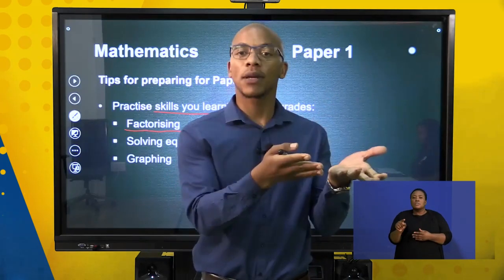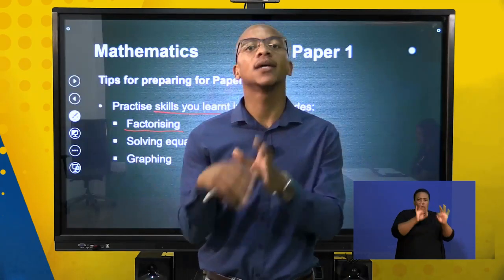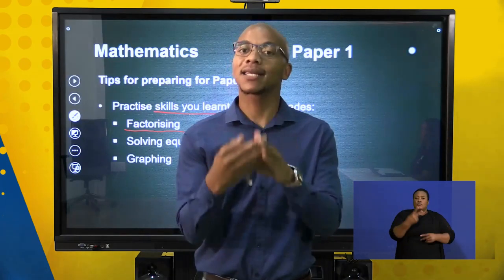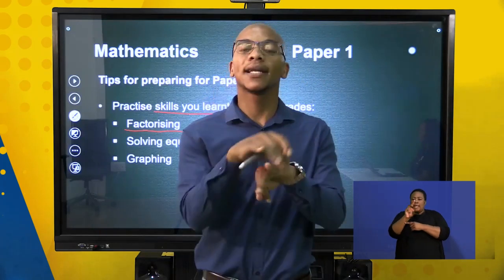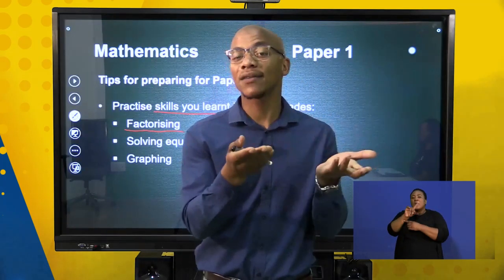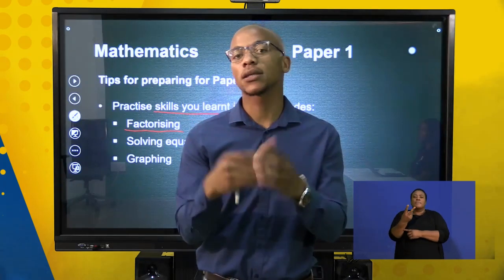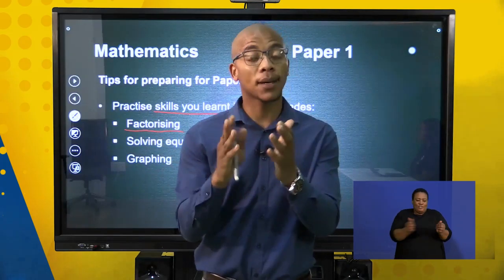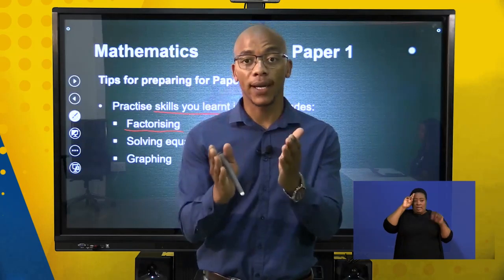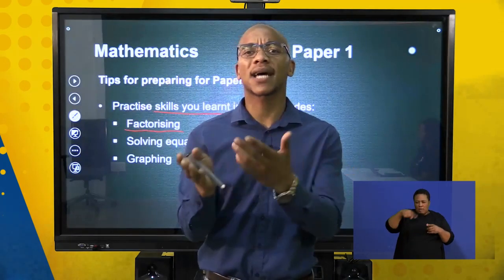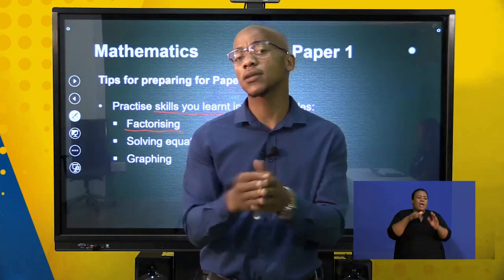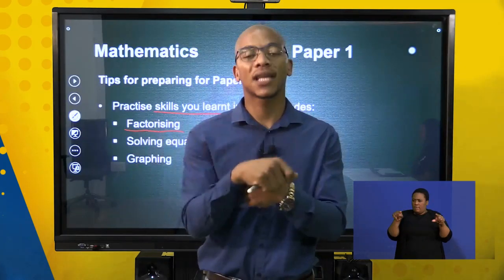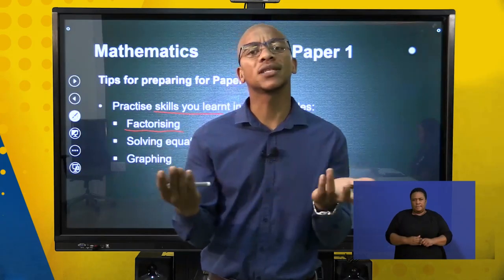Difference of two squares is a perfect square minus a perfect square. A trinomial has three terms — tri means three — and the leading term is always your x squared, which might have a coefficient in front. For grouping, you take things with common factors and put them together, but your signs always need to be correct. For taking out a common factor, if there is something common between two or more terms, you take it out and work it out using division.